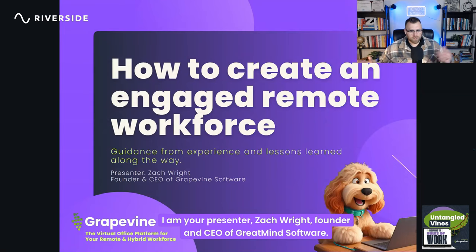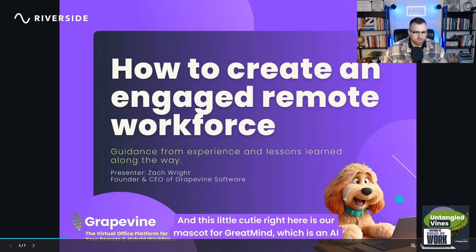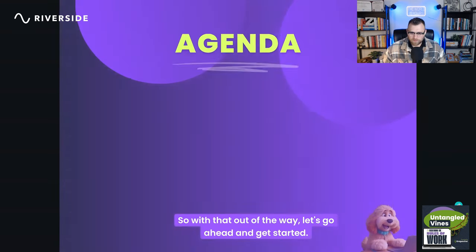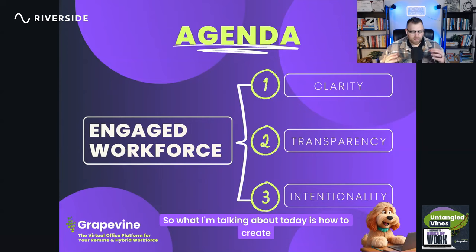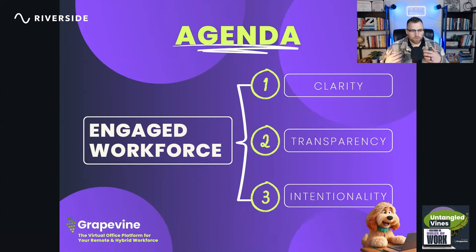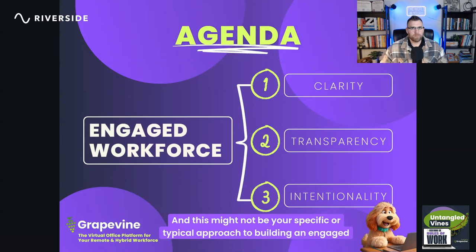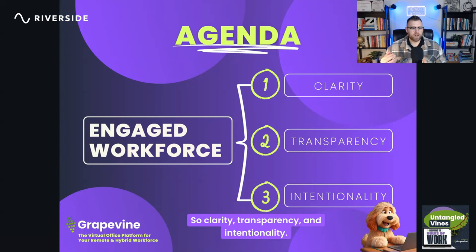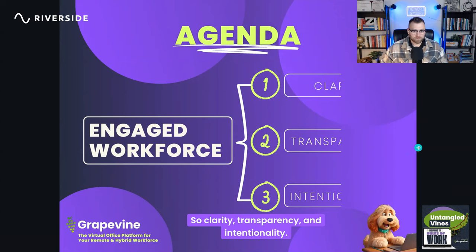I am your presenter, Zach Wright, founder and CEO of Grapevine Software. Our mascot for Grapevine is an AI animation of my dog, Zola. With that out of the way, let's get started. What I'm talking about today is how to create a remote workforce that is engaged, and this might not be your typical approach — as you can see from the agenda topics: clarity, transparency, and intentionality.